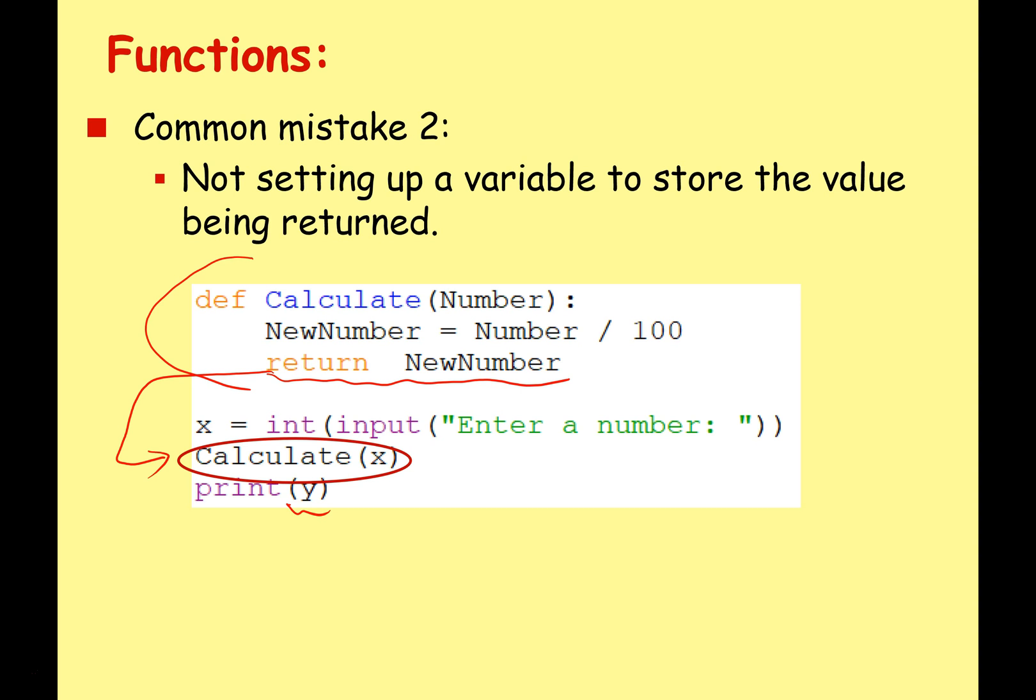If you're returning a value it's like throwing a ball to somebody - there's got to be somebody there to catch it. You have to have a variable set up to store the value when it goes back to your main program.